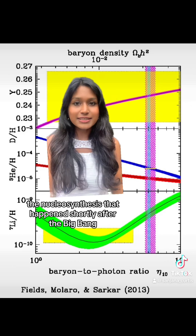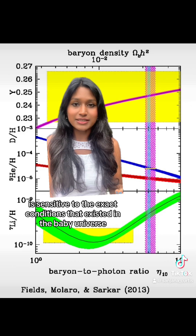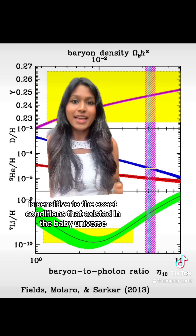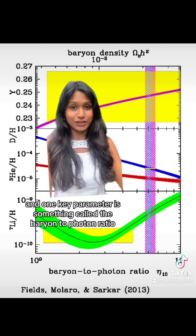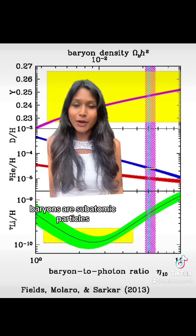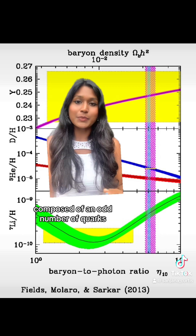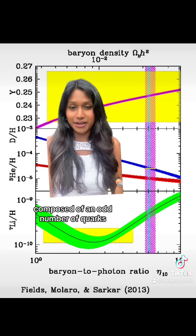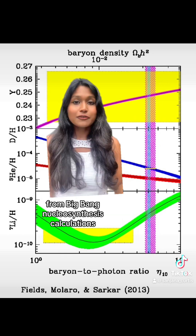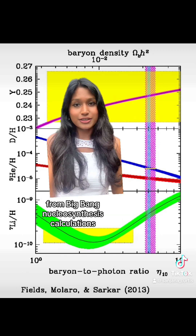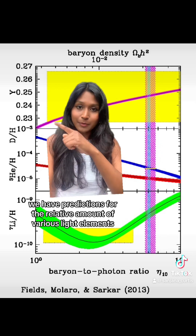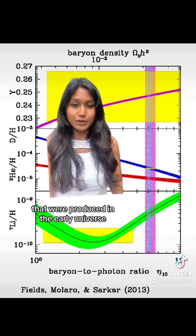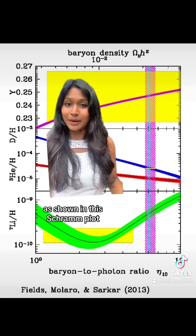The nucleosynthesis that happened shortly after the Big Bang is sensitive to the exact conditions that existed in the baby universe, and one key parameter is something called a baryon-to-photon ratio. Baryons are subatomic particles like protons and neutrons composed of an odd number of quarks. From Big Bang nucleosynthesis calculations, we have predictions for the relative amounts of various light elements that were produced in the early universe, as shown on this Schramm plot.